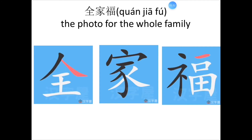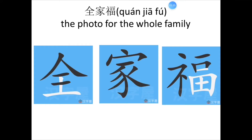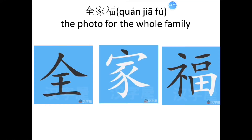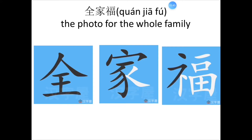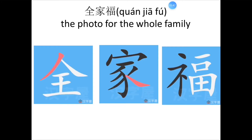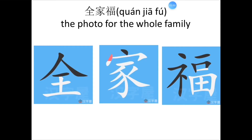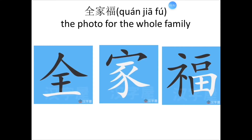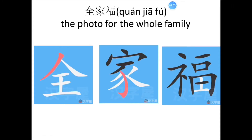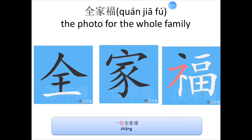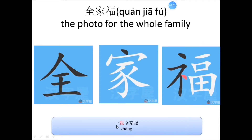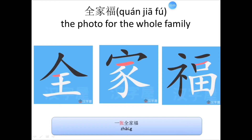全家福是照片。 Therefore, we need a measure word for 全家福。 There is a measure word for 照片, that is 张。 We usually say 一张照片。 全家福 is also a kind of photo, so the measure word for 全家福 is also 张。 Because the tone of 张 is the first tone.